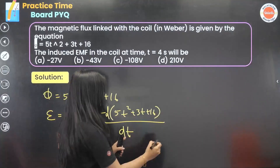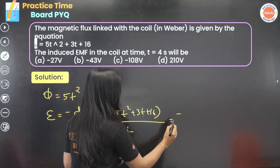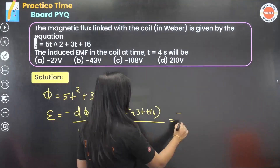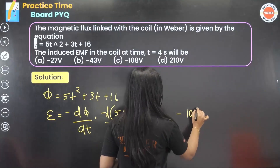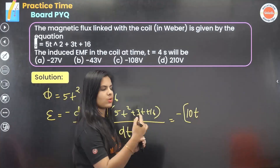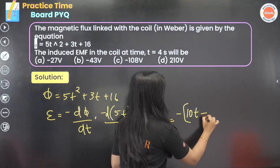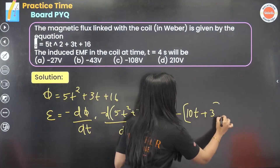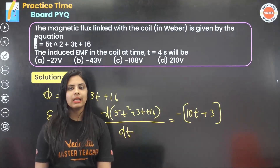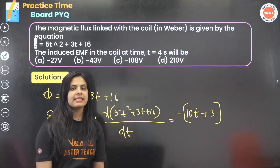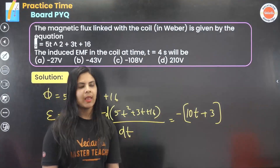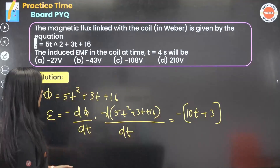Differentiating term by term: the derivative of 5t² gives 10t, the derivative of 3t gives 3, and the constant 16 gives 0. So we get induced EMF = minus(10t + 3).